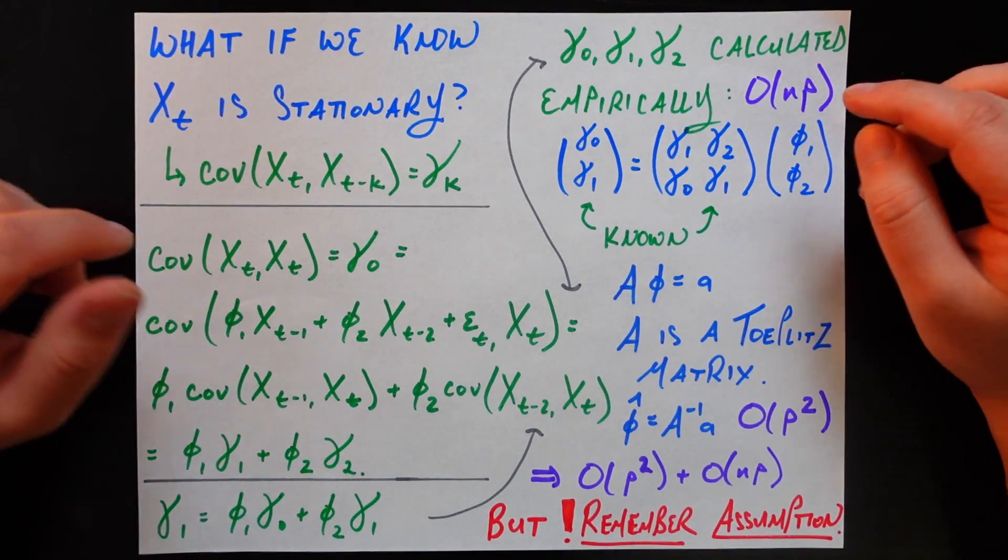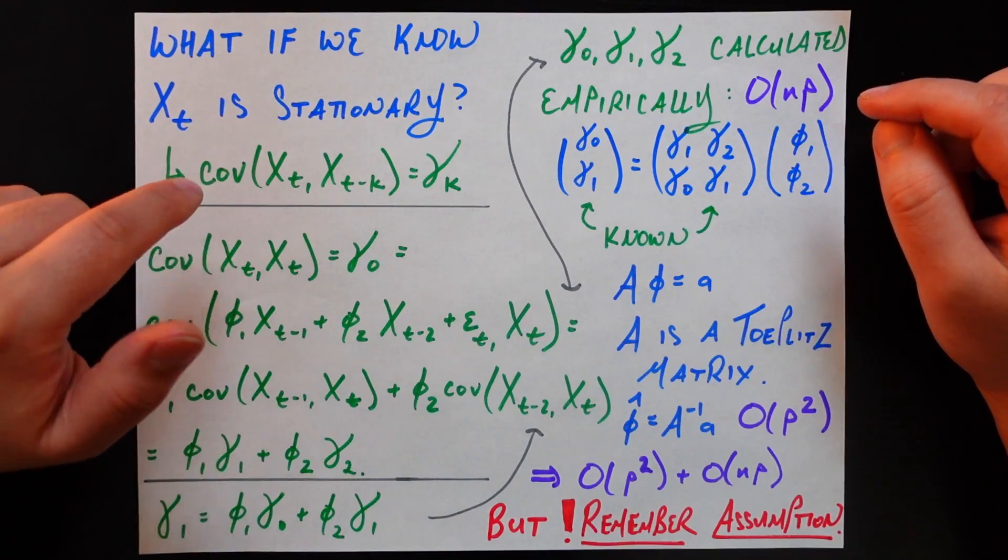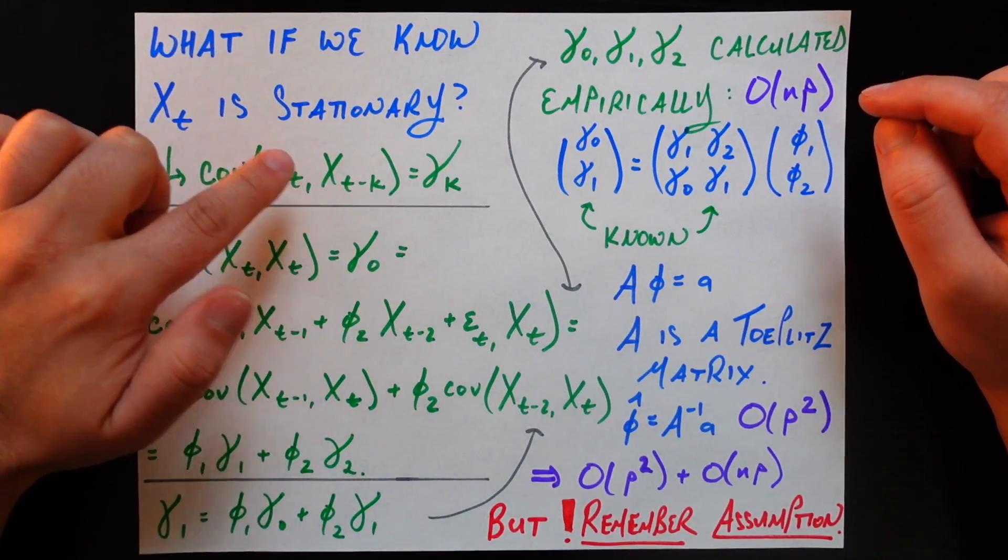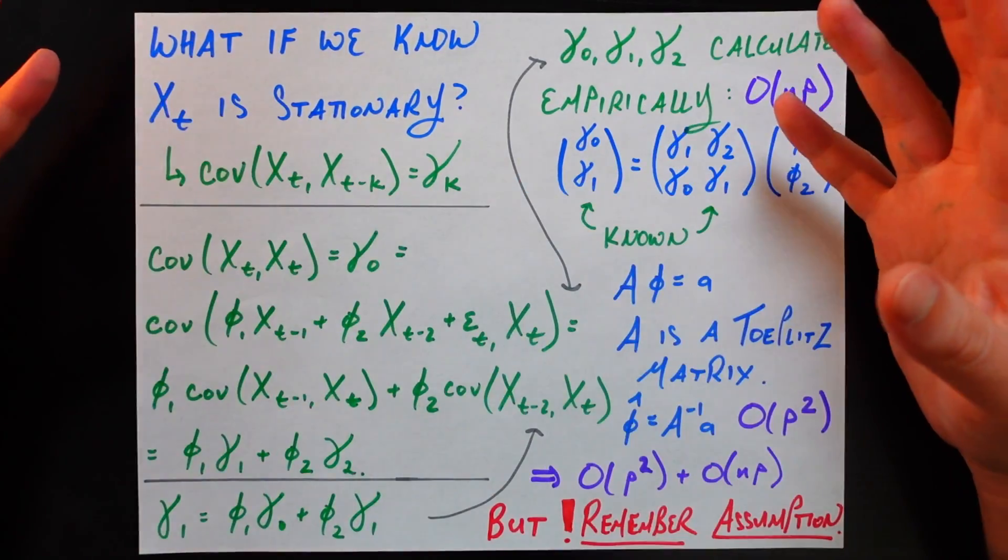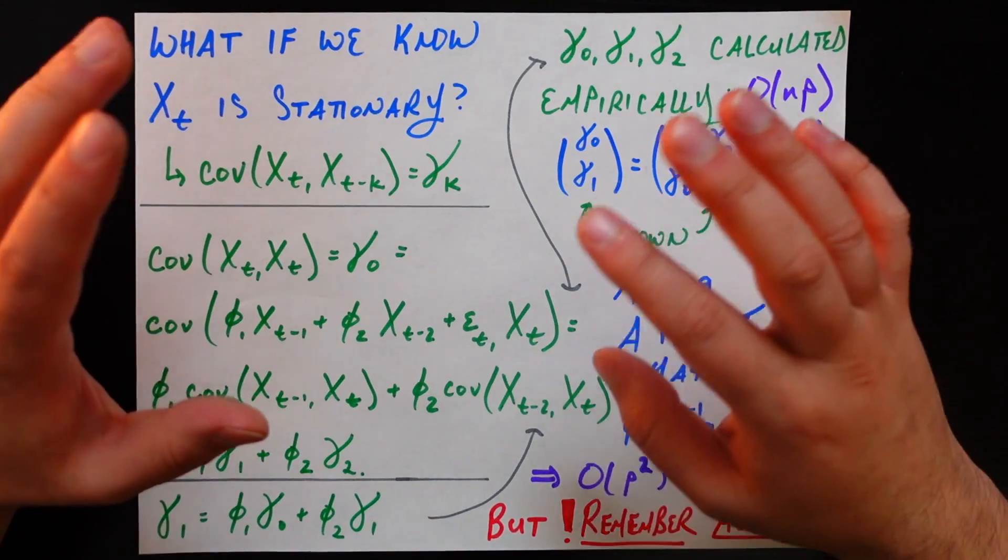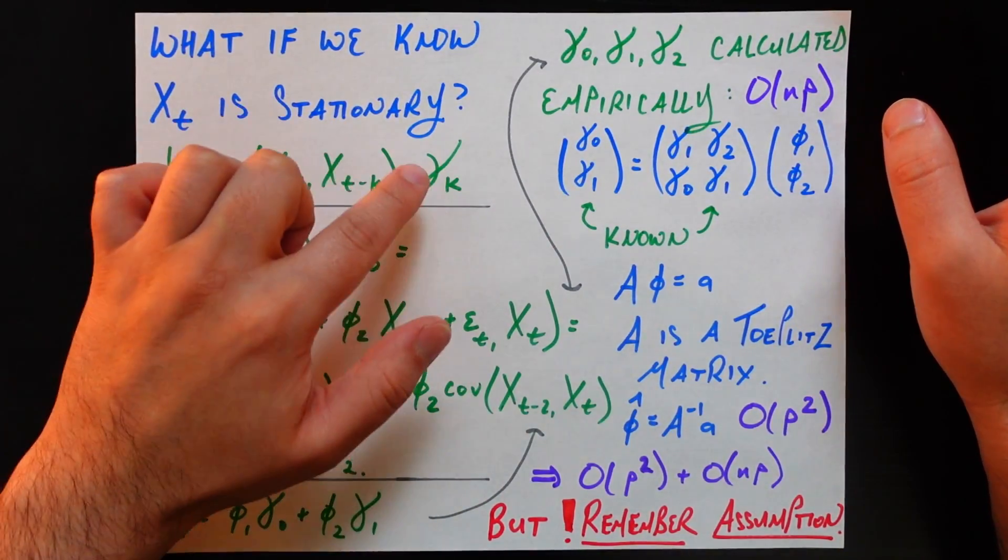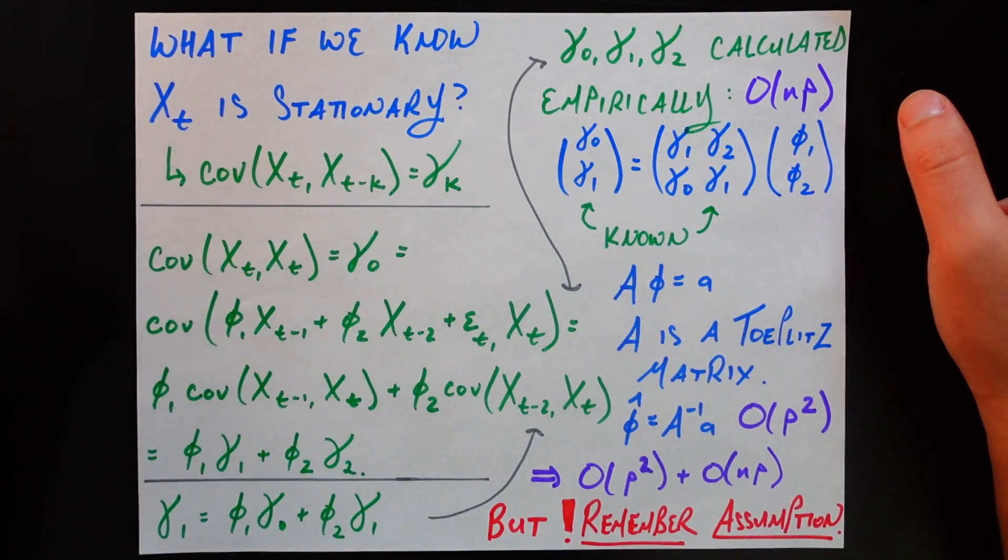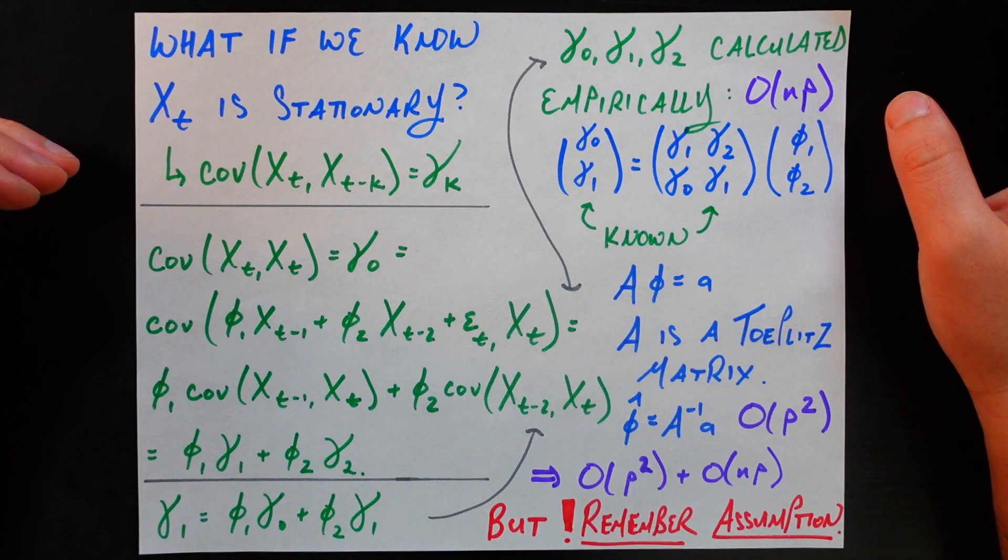the covariance could be a function of t and k, t being the time at which we're looking at it, and k being the number of lags between these two periods. It could be a function of both, but we're saying under stationarity, no, it's just going to be a function of k. That's why we write gamma sub k and not gamma sub t and k. So that's going to be the main assumption we need, and you'll see exactly where that comes in.